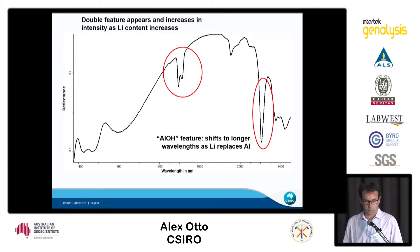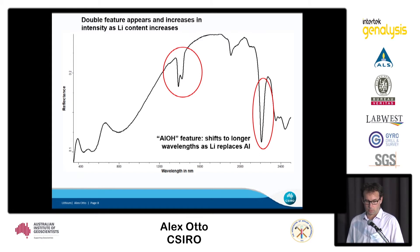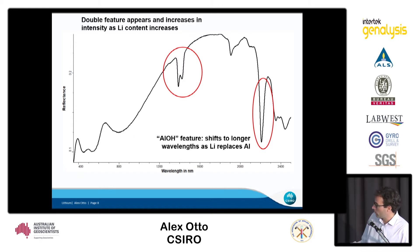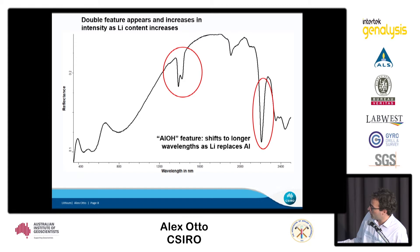Now I'd like to talk more about the spectroscopic work we did. This is a fairly typical spectrum of a muscovite which does have some lithium in it. There are specific features including this one and the 2200 nanometer feature.